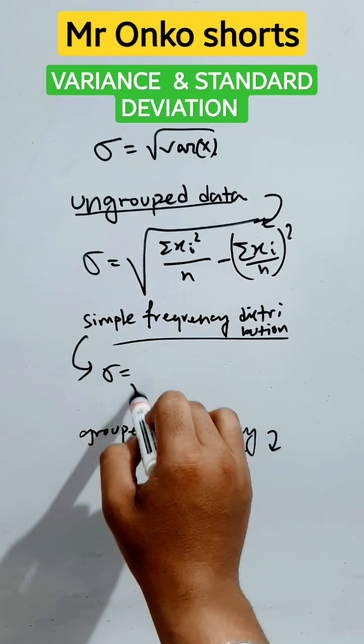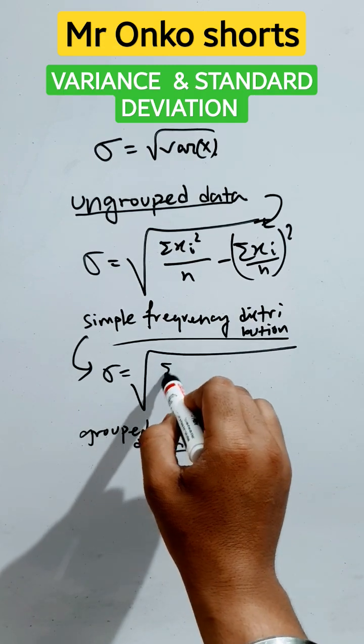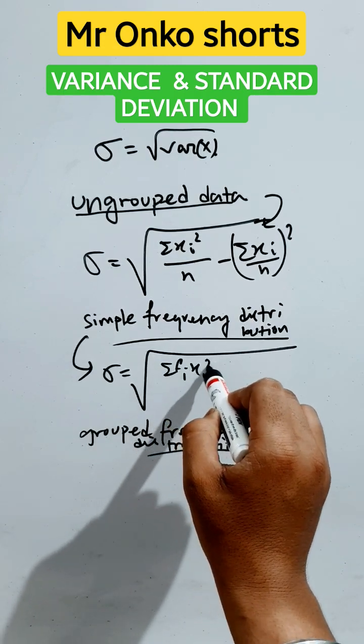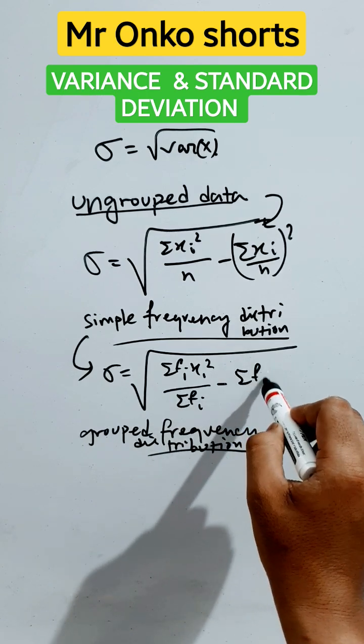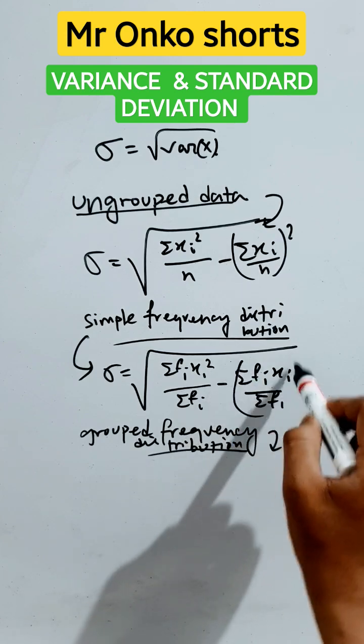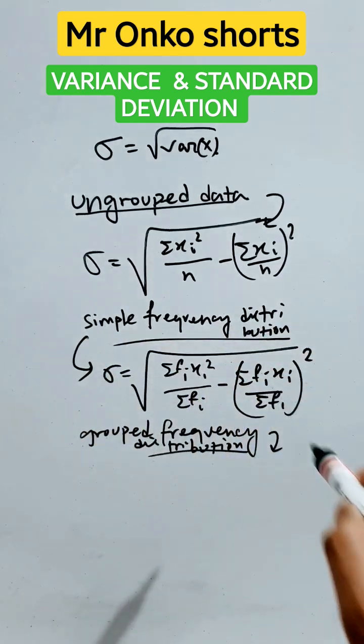For simple frequency distribution, the formula is the square root of summation of fi xi squared divided by summation of fi minus summation of fi xi by summation of fi whole squared.